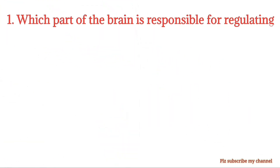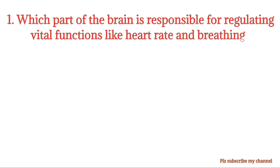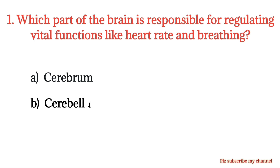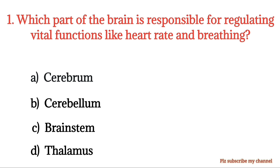MCQ number 1. Which part of the brain is responsible for regulating vital functions like heart rate and breathing? Option A: Cerebrum. Option B: Cerebellum. Option C: Brainstem. Option D: Thalamus. The correct option is Option C.